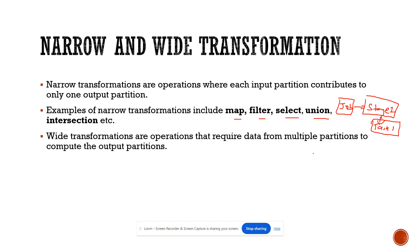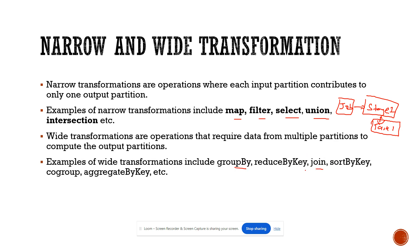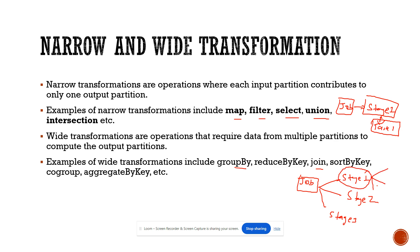Wide transformations are operations that require data from multiple partitions to compute the output partition. Examples would be group by, joins, sorting, and aggregation — these are all heavy operations. It's called a wide transformation where your job is divided into several stages: stage one, stage two, stage three, and each stage is further divided into several tasks. Operations like map, filter, and select are your narrow operations.